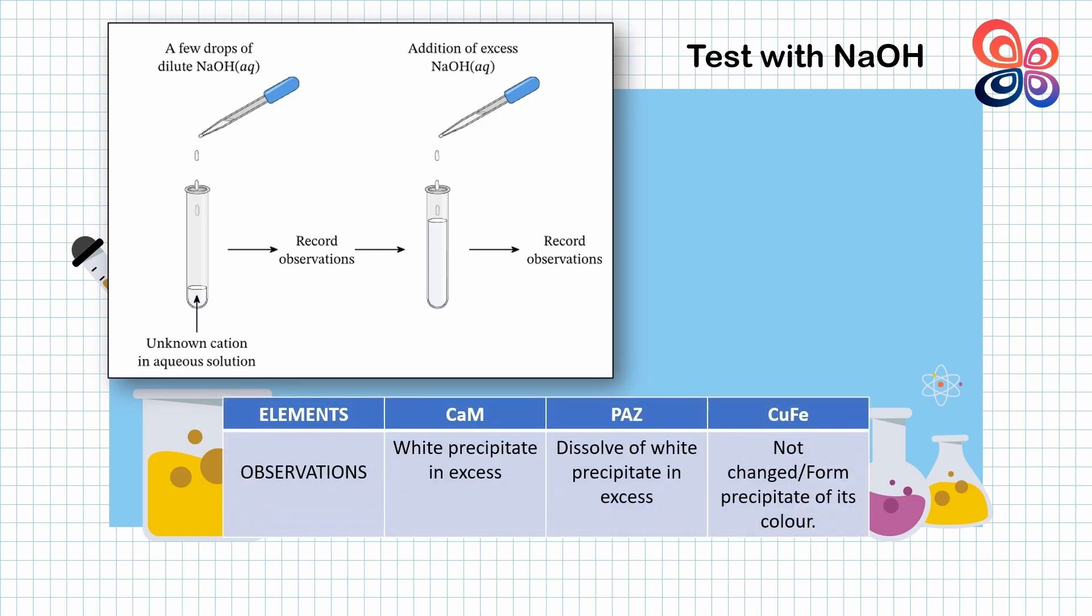Meanwhile, salt containing lead, aluminium, and zinc, the white precipitate of these cations are dissolved in excess. And the last one, the salt containing copper and iron is not changed, which is the formation of precipitation of its color form.